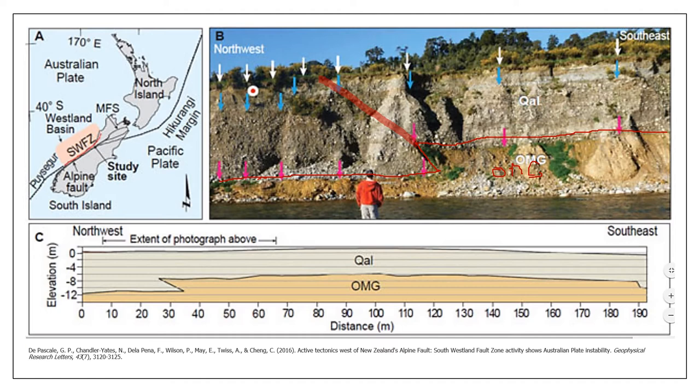This is the location of the Southwestland Fault, located in the South Island of New Zealand. Chandler Yates later associated the fault with the Alpine Fault, which is like the Philippine Fault Zone of New Zealand — it's a long fault exceeding a thousand kilometers in length.